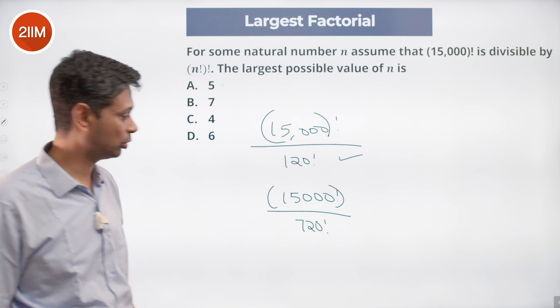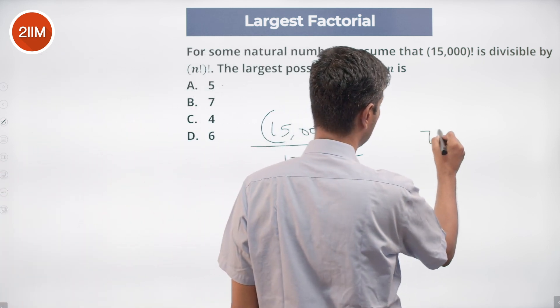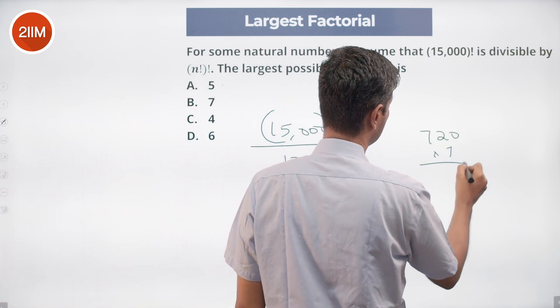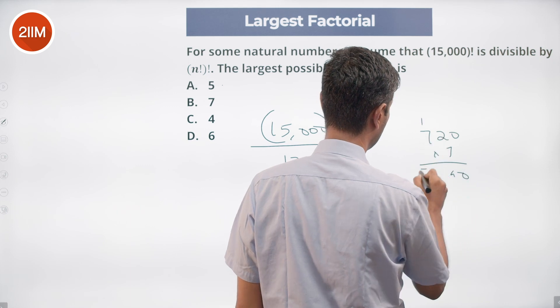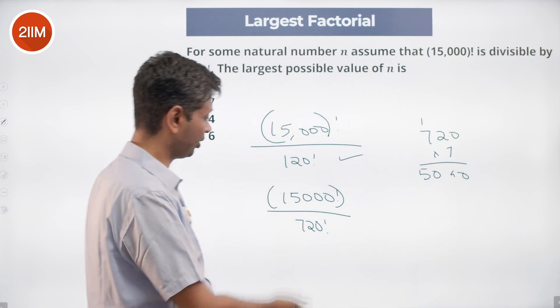Put 7 factorial: 720 into 7, 5040. Yep, that also sits within this. 7 should be possible.